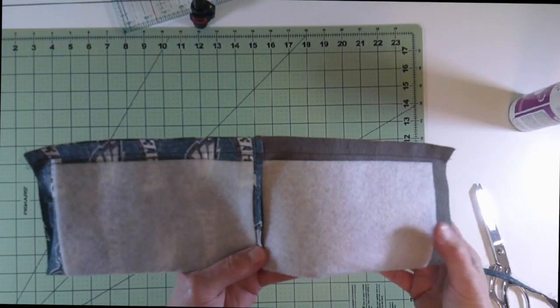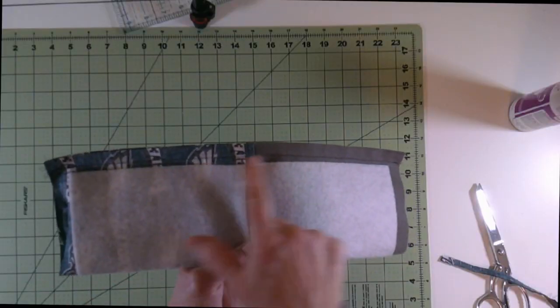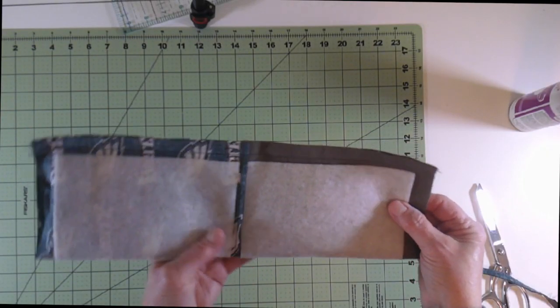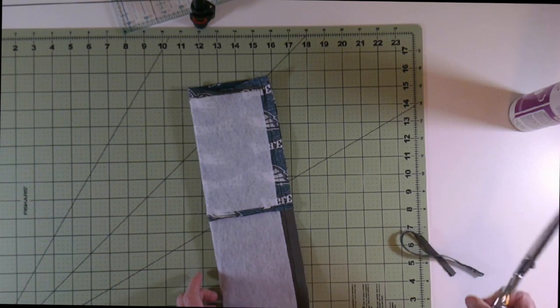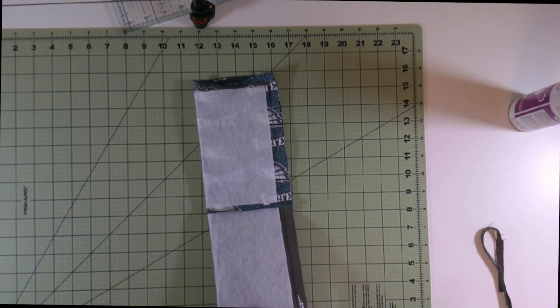And we're going to do another half inch seam here. I have sewn a half inch seam all the way down that length. Now I just want to trim this seam to about a quarter of an inch.